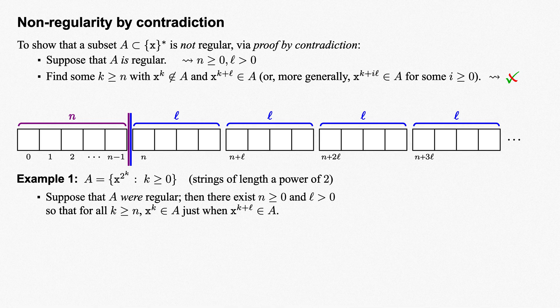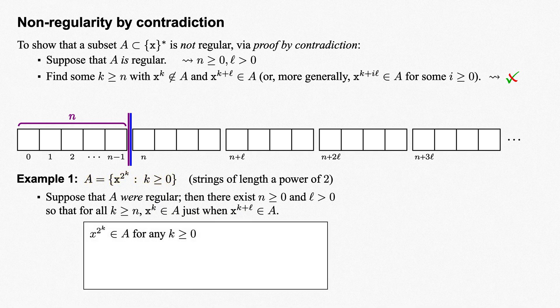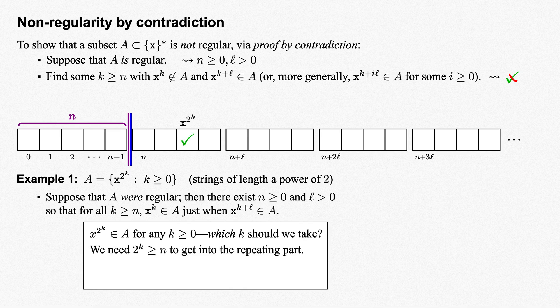With these values n and L in hand, our goal is to find some power of x in A, such that adding L to the exponent yields a string not in A. Finding strings in A is easy — they're just x to a power that's a power of 2, i.e., they have the form x to the 2 to the k for some k. The only question is which k should we take? Well, first of all, we need our power 2 to the k to be at least n to get into the repeating part of the set, so we want 2 to the k greater than or equal to n.